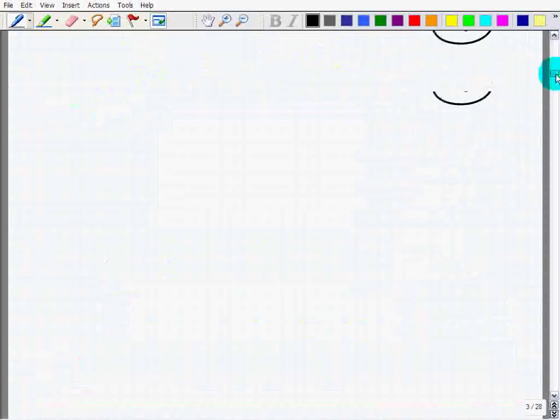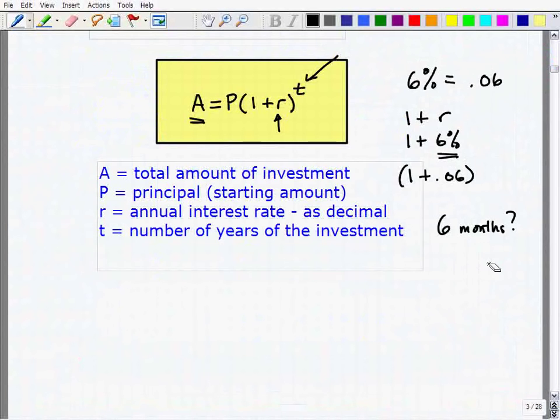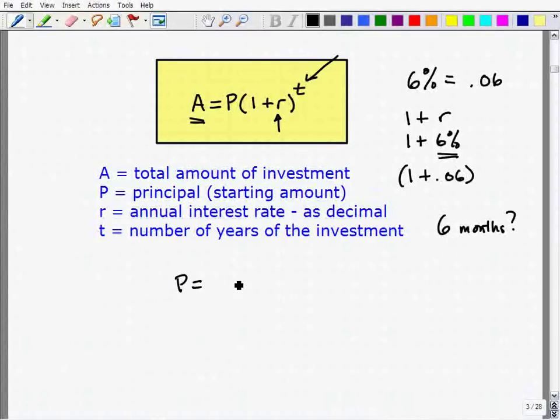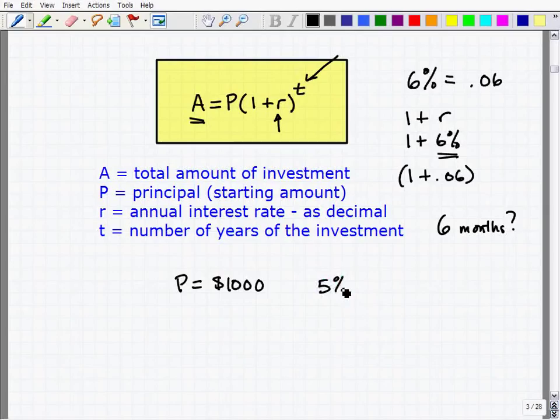Let's go ahead and show you an example of how compound interest works. Let's suppose you have a principal, your starting amount. Let's suppose that's $1,000 again. You're going to go to a particular bank in town, and they're going to give you 5% compounded interest. And you want to invest for 4 years. So t would be 4, r would be 5, and your principal is $1,000.